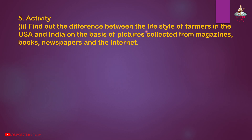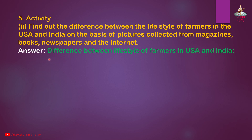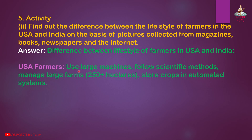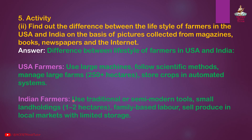Second activity: Find out the difference between the lifestyle of farmers in the USA and India. Answer: USA farmers use large machines, follow scientific methods, manage large farms of 250-plus hectares, and store crops in automated systems. Indian farmers use traditional or semi-modern tools, have small land holdings of 1 to 2 hectares, rely on family-based labor, and sell produce in local markets with limited storage.